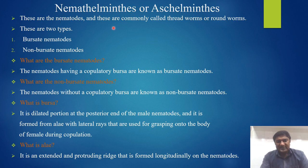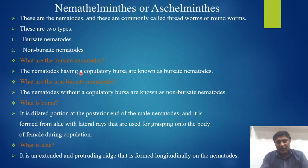Phylum Nematohelminthes, or Aschelminthes. These are the nematodes, formally called threadworms or roundworms. These are of two types: one is the bursate nematodes and the other is the non-bursate nematodes. Nematodes having a copulatory bursa are known as bursate nematodes, while nematodes without a copulatory bursa are known as non-bursate nematodes.